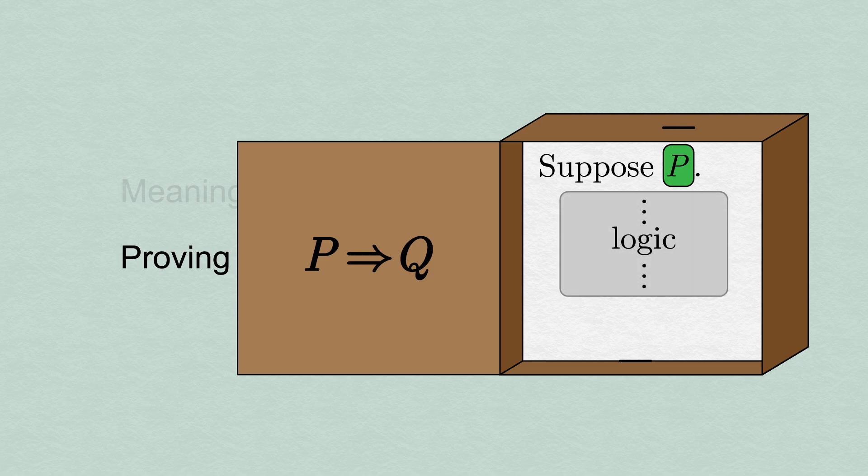From this point forward, the structure of the proof looks much like our last two. We use a sequence of logical steps, concluding with the deduction that Q is true, which is what our box needs to spit out.